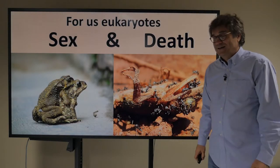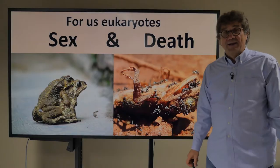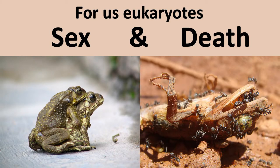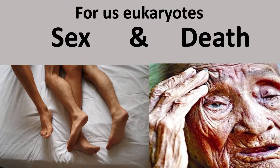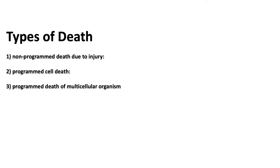Now for us eukaryotes, sex and death are linked. Let's talk about the types of death. We can have non-programmed death due to injury — that's called necrosis. Then there's programmed cell death, called apoptosis. And then there's programmed death of a multicellular organism — senescence, getting older — which I think is a programmed type of getting older.